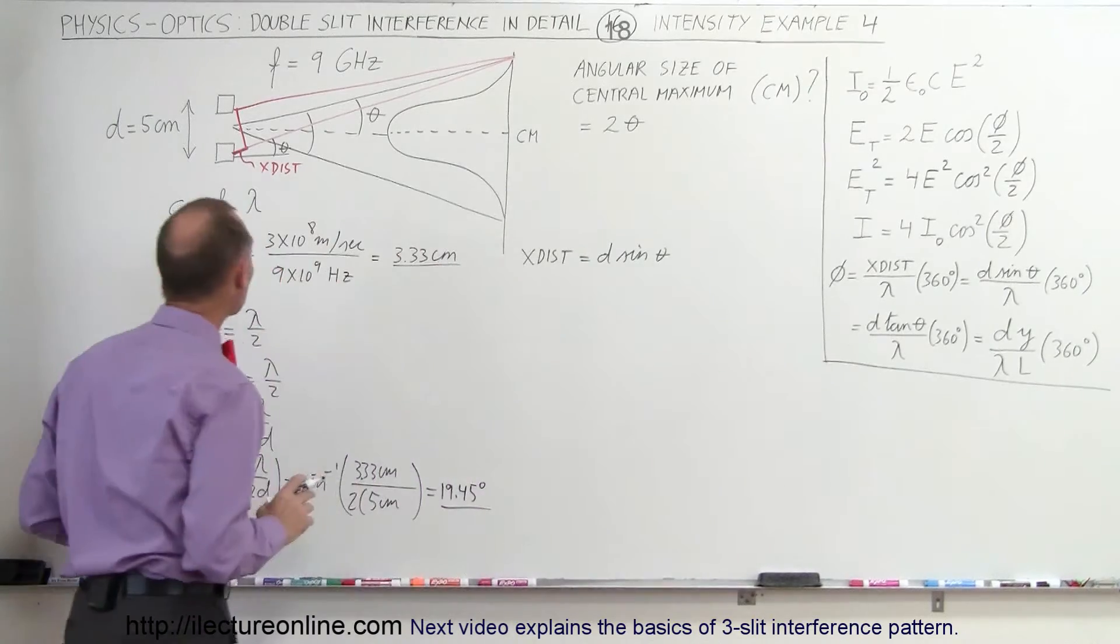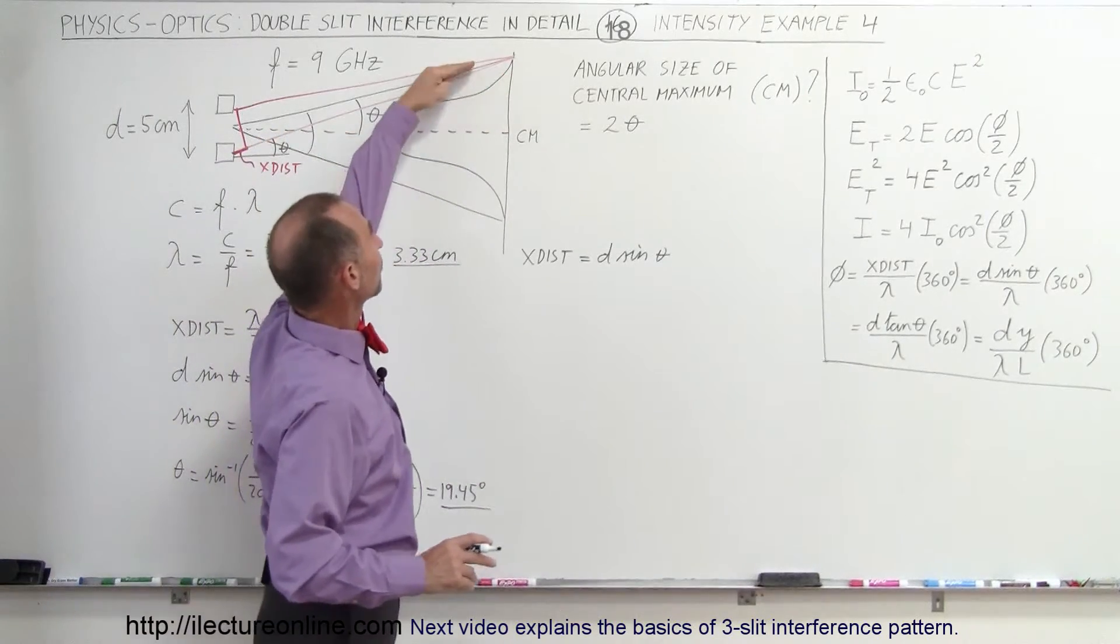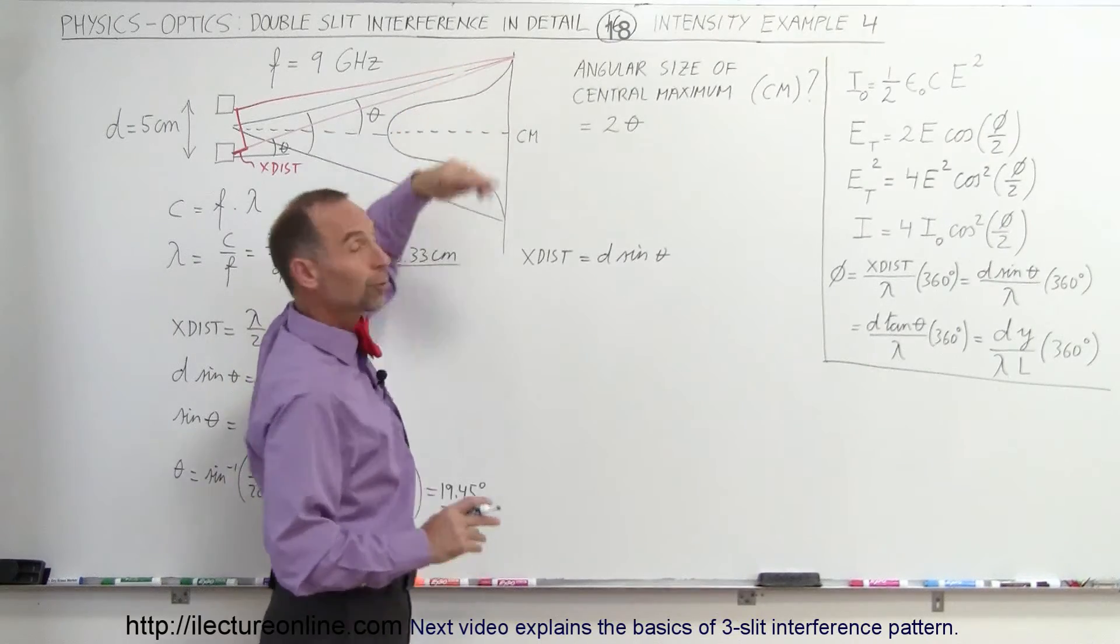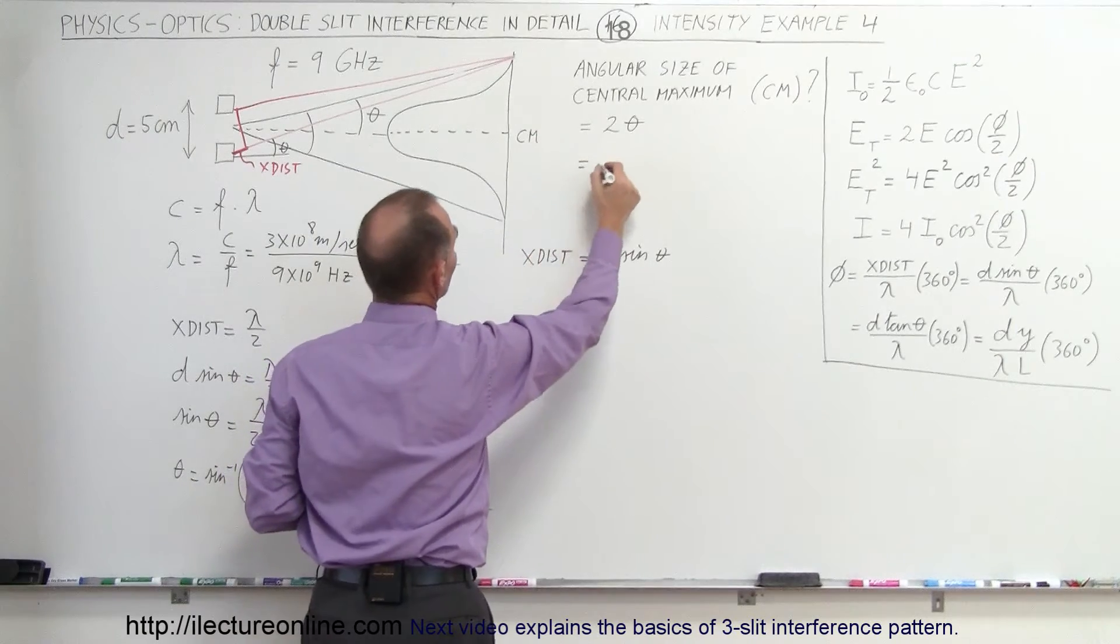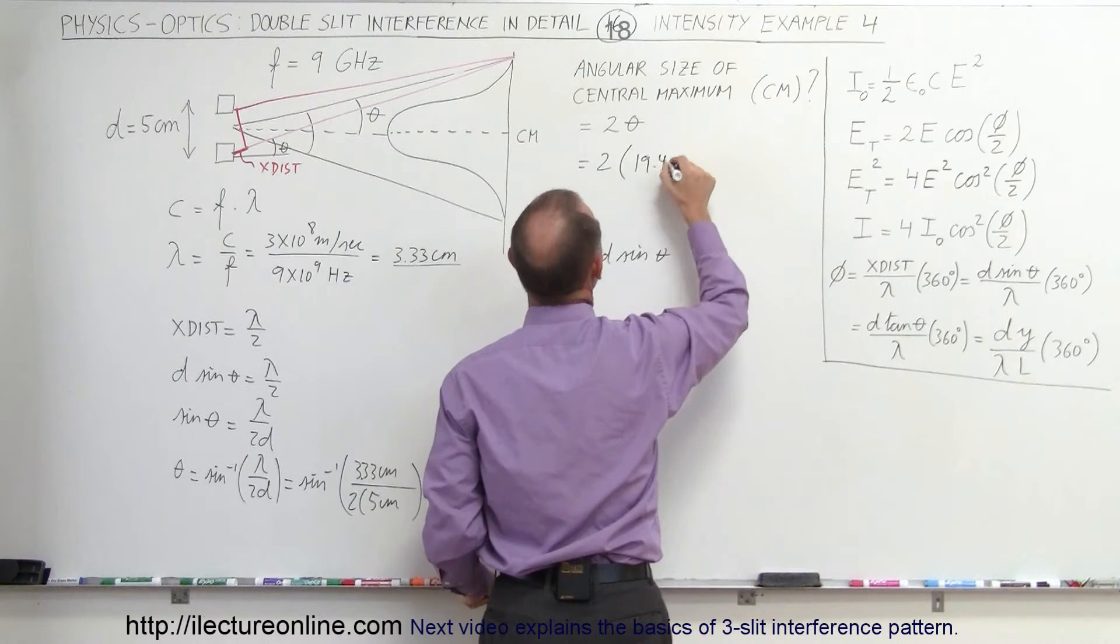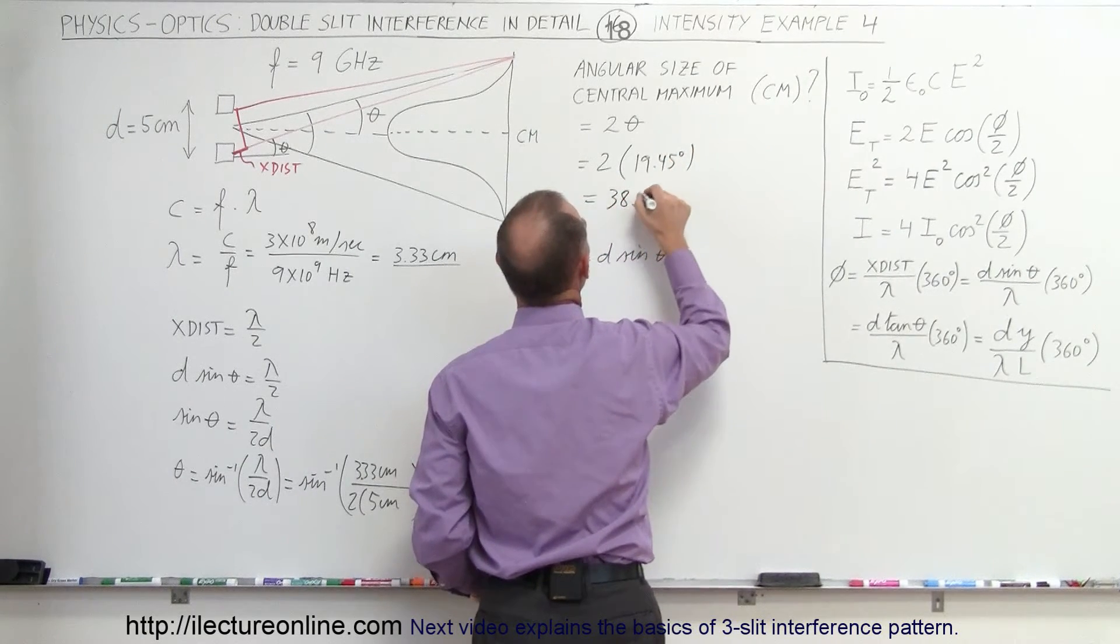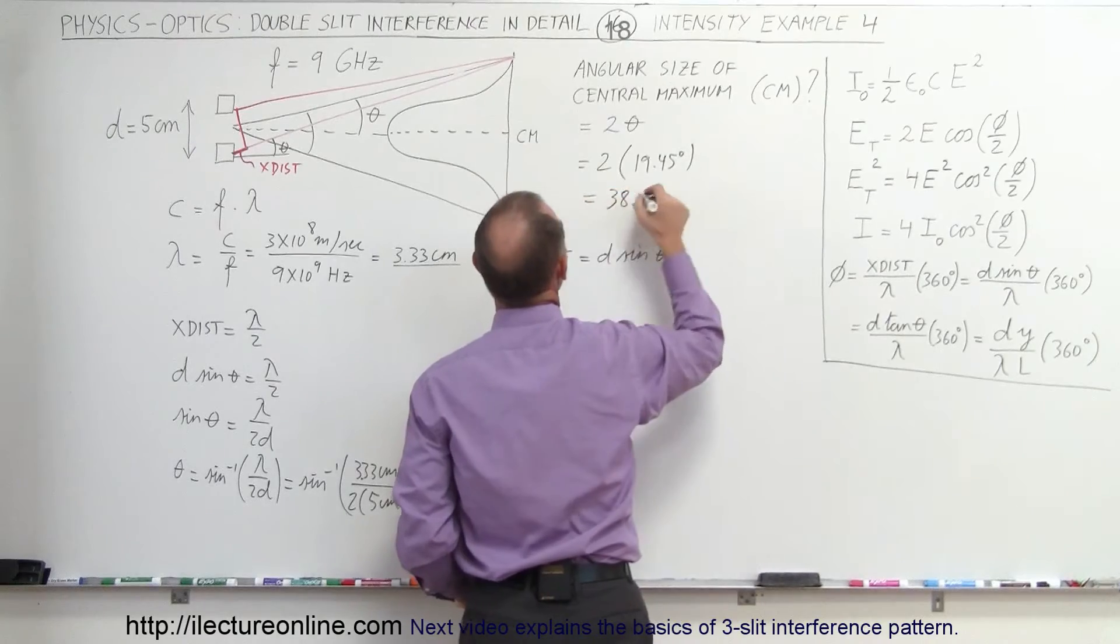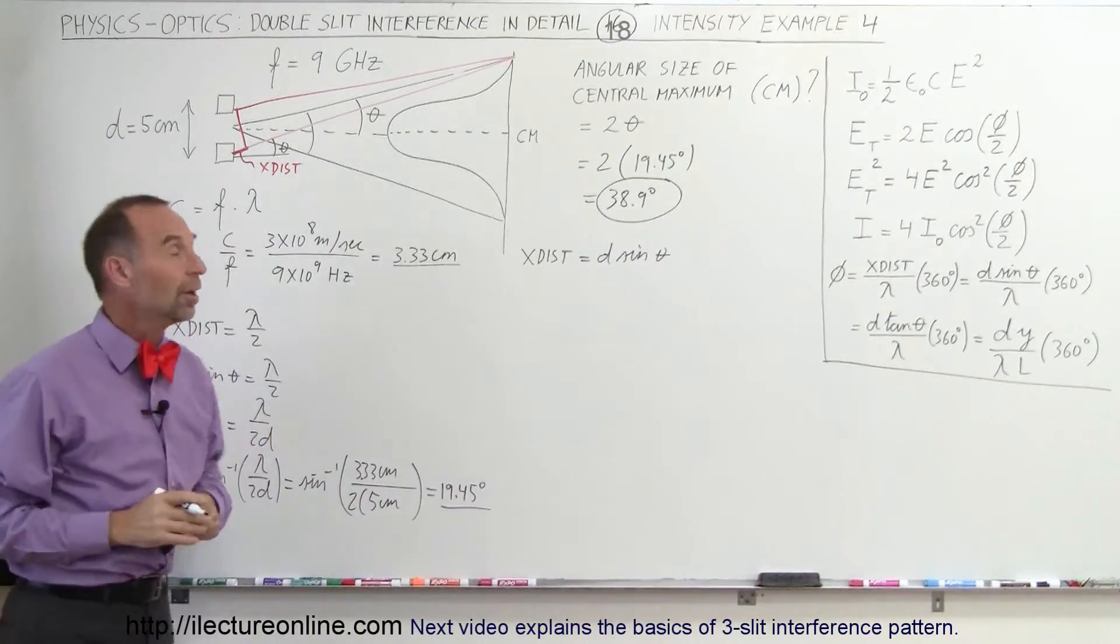Now that we know the angle to the first minimum on one side is a 19.5 degree angle, to find the total width we have to double that. This is therefore equal to 2 times 19.45 degrees, which equals 38.9 degrees. That would be the width of the center maximum of this particular antenna pattern.